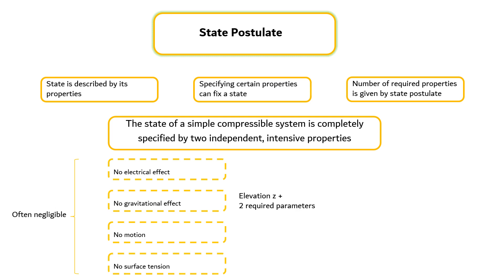The state postulate requires that the two properties specified be independent to fix the state. Two properties are independent if one property can be varied while the other one is held constant. Temperature and specific volume, for example, are always independent properties, and together they can fix the state of a simple compressible system.